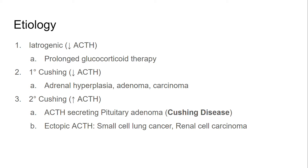Iatrogenic Cushing syndrome is caused by prolonged glucocorticoid therapy. There are many diseases where this is relevant — for example, many autoimmune diseases require glucocorticoids to suppress the immune system and induce remission. Iatrogenic is actually the most common cause. As a result of chronic glucocorticoid therapy, there is decreased ACTH level due to negative feedback, and because of decreased ACTH, the adrenal glands are not producing as much cortisol, leading to bilateral adrenal atrophy.